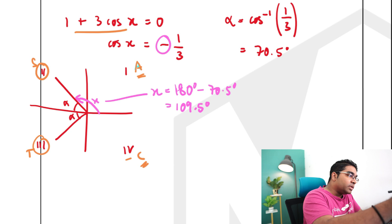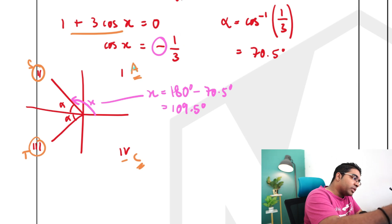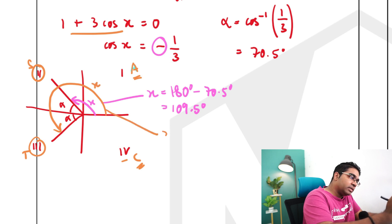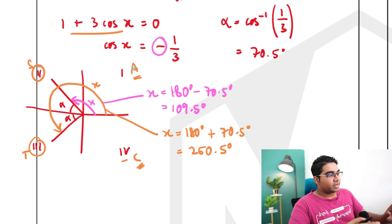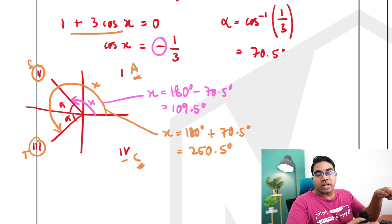Another x will be, so we're going to go from here all the way over to here. This is also x. So this value of x will be equals to 180 degrees plus alpha, which is 70.5 degrees. And our answer here is 250.5 degrees. And so these are the values of x that satisfy cos of x is equals to negative 1 over 3.